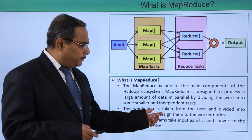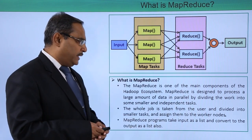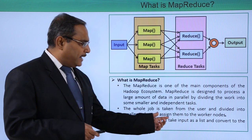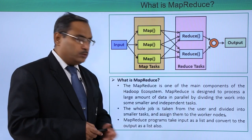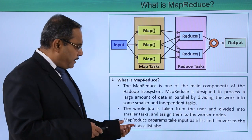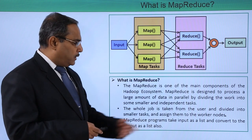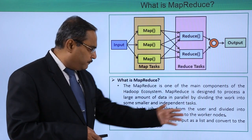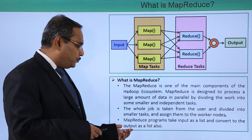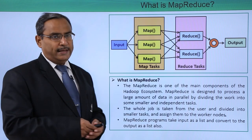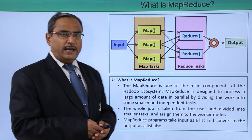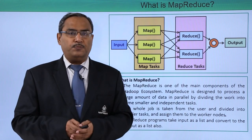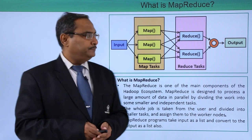The whole job is taken from the user, divided into smaller tasks, and assigned to the working nodes. MapReduce programs take inputs as a list and convert to the output also as a list.